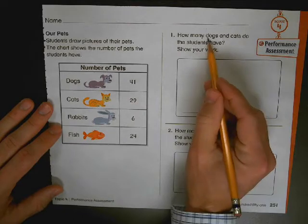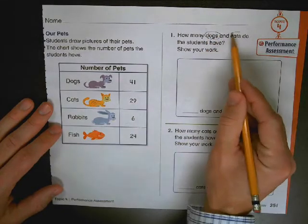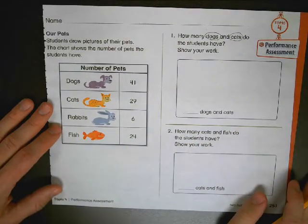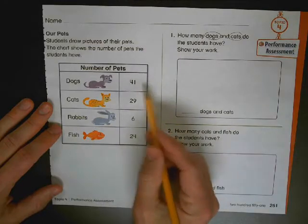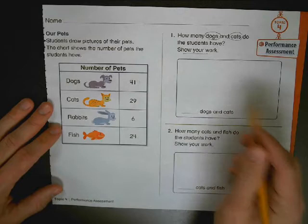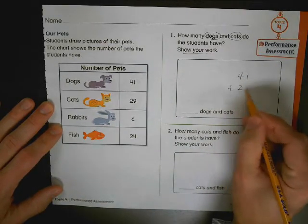How many dogs and cats do the students have? Show your work. It's pretty straightforward. All you're going to do is take two numbers, dogs and cats, show your work for how many they have.